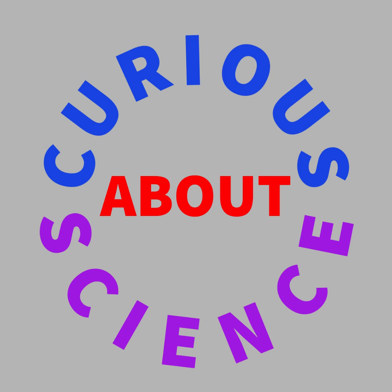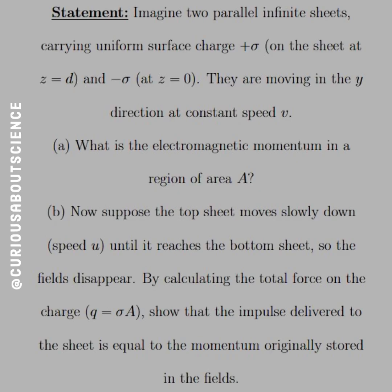All right, welcome back. Now we get to deal with a slightly different scenario, but a fun question nonetheless. So the statement is, imagine two parallel infinite sheets carrying uniform surface charge plus sigma on the sheet at z equals d, and minus sigma at z equals zero. They are moving in the y direction at constant speed v.